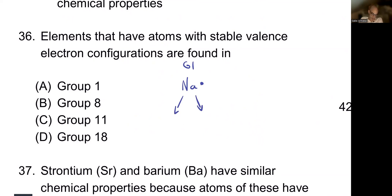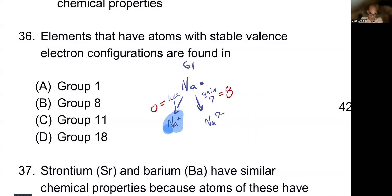If sodium loses one valence electron, it becomes Na+. If it were to gain seven, it would be Na7−. It's going to lose one because that's easier. Going to zero loses all valence electrons; going to eight requires gaining seven. The more stable option is the one that does less. The original sodium with one valence electron is not stable.